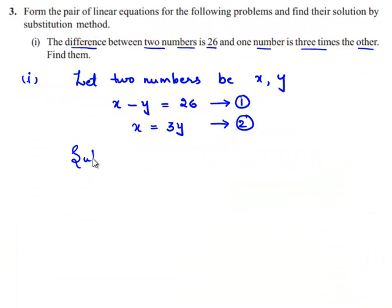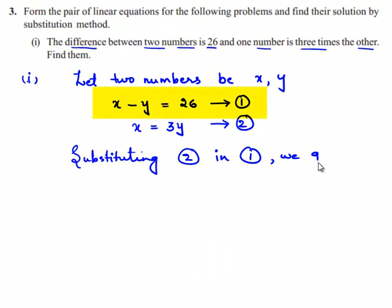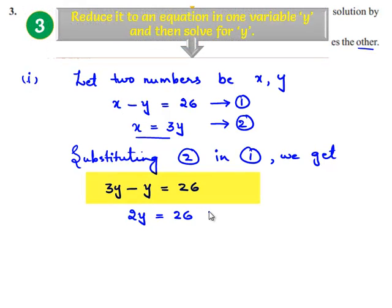So substituting equation number two in one, we get, in place of x, we can substitute three y, so three y minus y is equal to 26. Three y minus y is nothing but two y, two y is equal to 26. That implies y is equal to 26 divided by two. So two goes in 26 as 13, that gives y is 13.